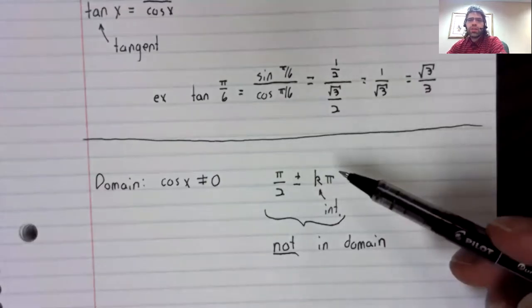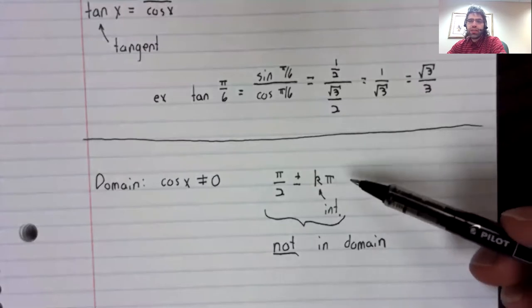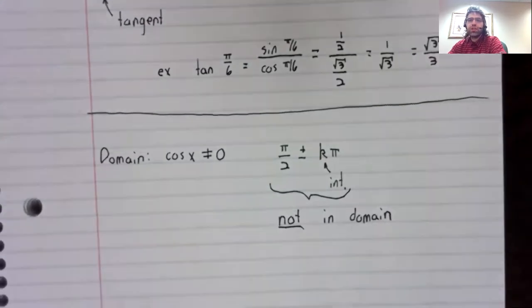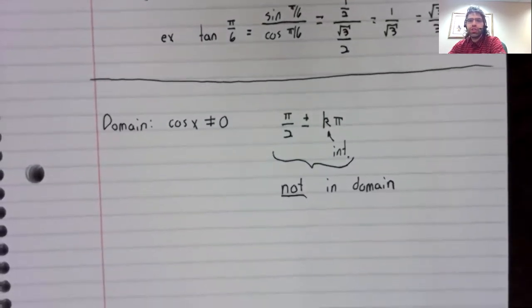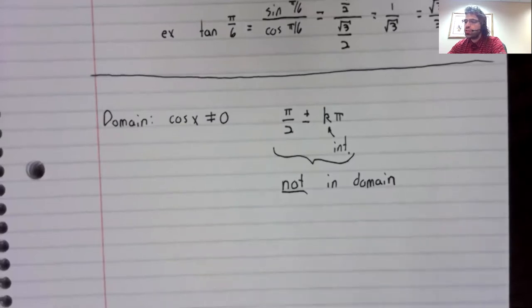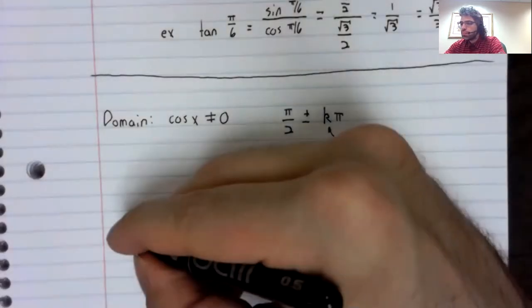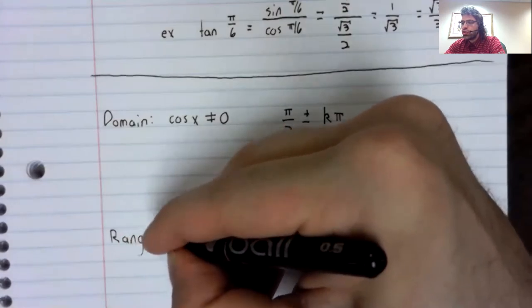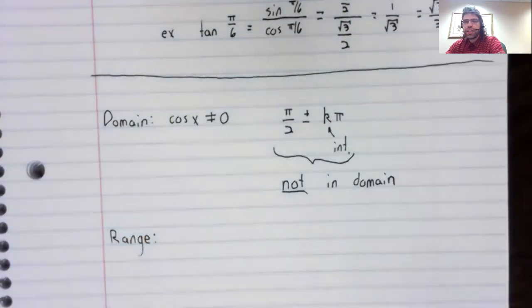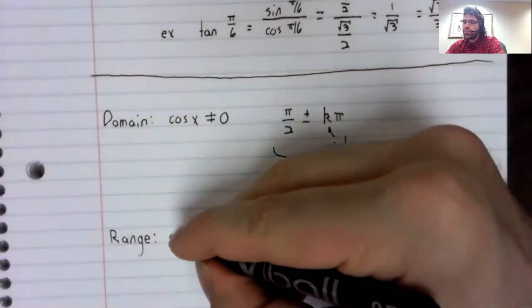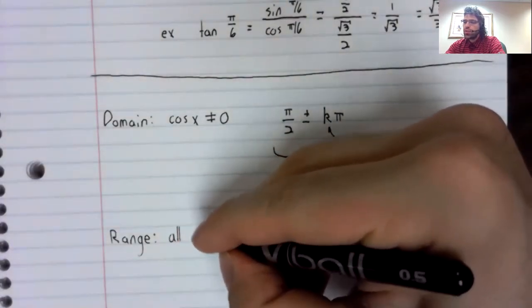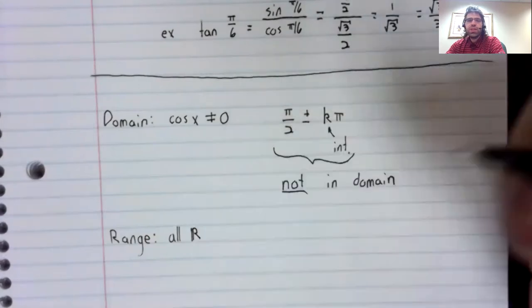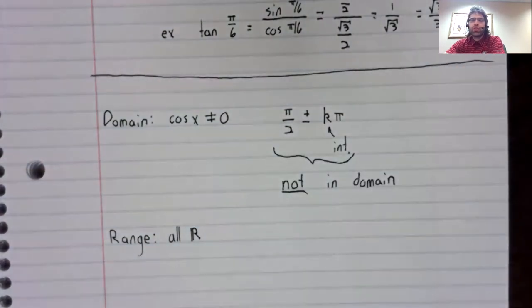And we'll look at this again graphically when we get to graphing the trig functions. The range of the tangent turns out to be all of the real numbers.